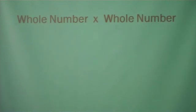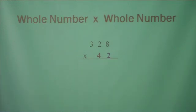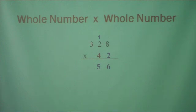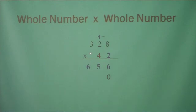Now we're going to multiply a whole number times a whole number: 328 times 42. Notice they're going to be color coded so you can follow where the numbers belong. 2 times 8 is 16 — put down your 6 and carry your 1. 2 times 2 is 4 plus your carry of 1 is 5. Now 2 times 3 is 6. Now we're going to sweep our carries — just put a line through it.